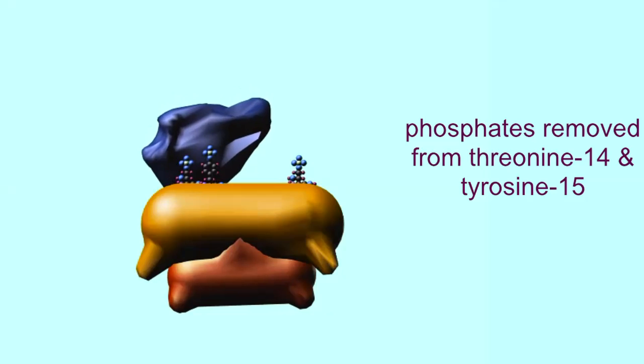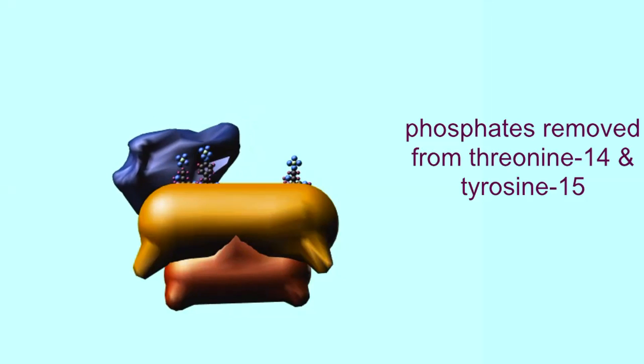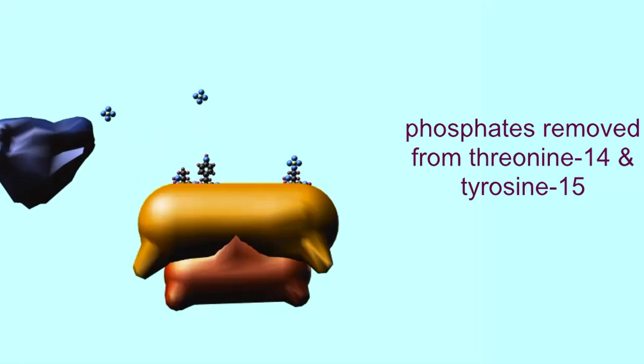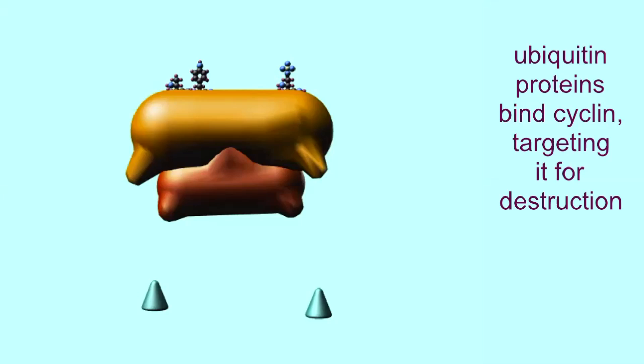This complex will now phosphorylate target effector molecules, which will then migrate the cell through the next stage of cell division. A cell must be able to inactivate these complexes, allowing the cell to migrate to the following stage of the cell cycle.